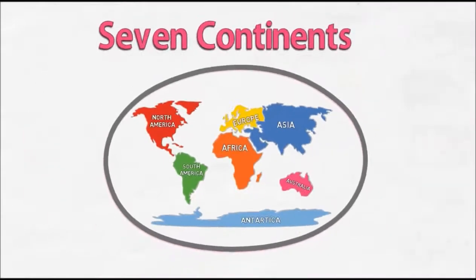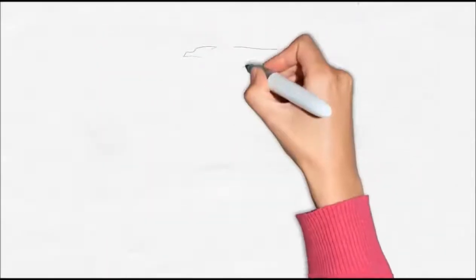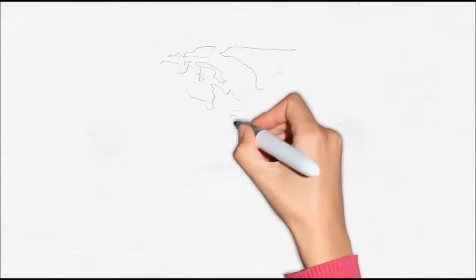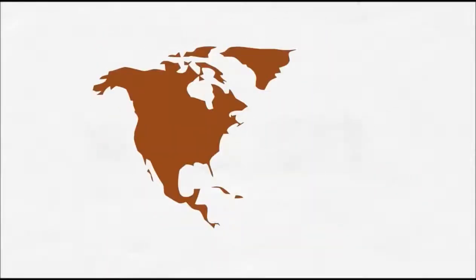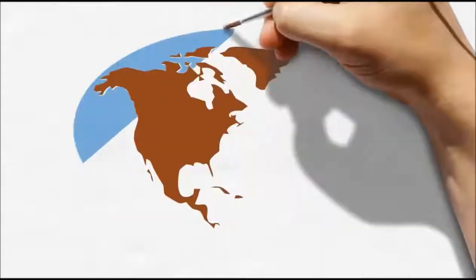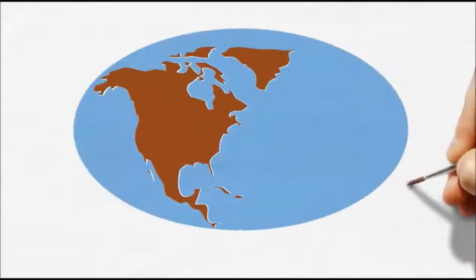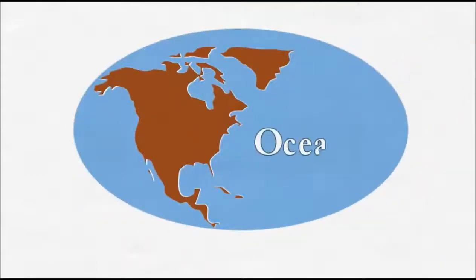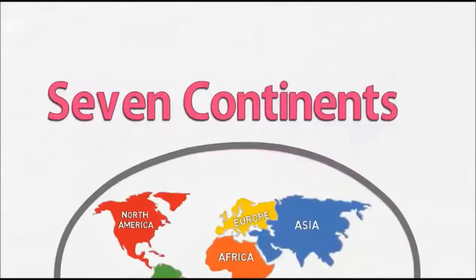Now it's time for the Verse 2 Stardica. The first thing we want to bring to this class is that a continent is a large landmass surrounded by great big bodies of water called oceans and seas.